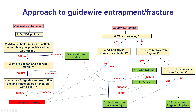What to do if, despite those efforts, guidewire entrapment or fracture occurs? For entrapment, the first thing is to not pull hard — this can lead to fracture, deformation, and make things worse. The first step is to advance a small balloon or a microcatheter as far distally as possible, and then pull gently. By doing this, in 90-plus percent of the time, the jailed wire will become freed and will come back.